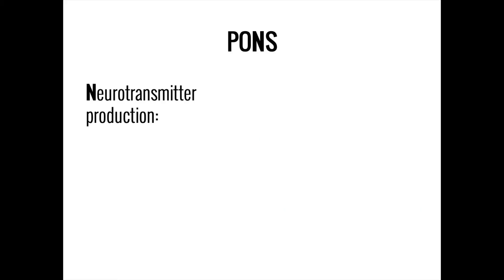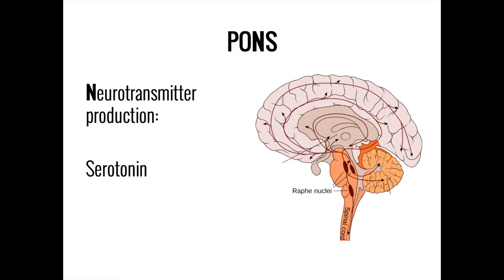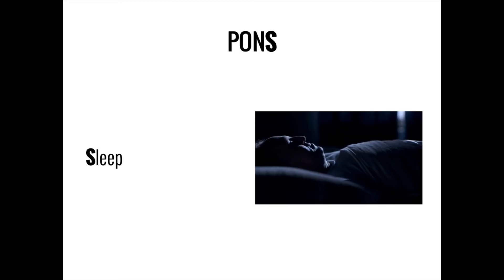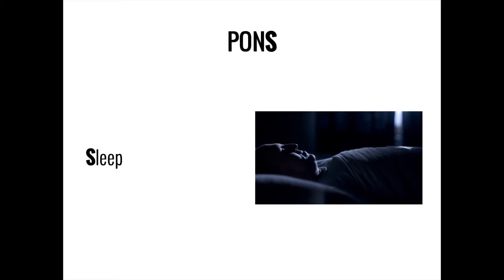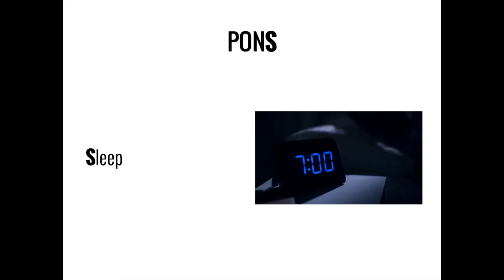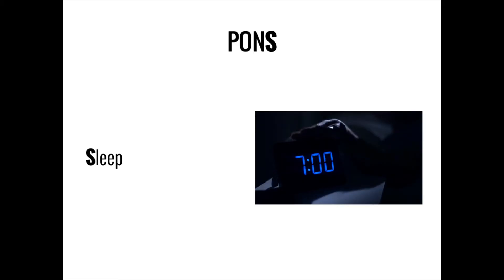N is for neurotransmitters. The pons contains two major sites of neurotransmitter production. The first is the raphe nucleus, which produces serotonin, a neurotransmitter involved in mood and emotion. The second is the locus coeruleus, which produces norepinephrine, a neurotransmitter that plays a major role in the sympathetic nervous system and its fight-or-flight response. S is for sleep: the pons contains structures important to the reticular formation and is in particular a major contributor to the sleep cycle.